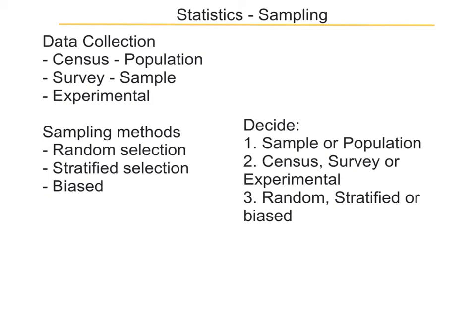With a biased sample, it means that you're not doing that properly. For example, if I was measuring the heights of students in Year 9 and I only measured the 14-year-old students, that would be biased because there are some 15-year-old students and they're probably taller. So when we're collecting data, we have to decide whether we're going to do the whole population or just sample some of it. If we do the whole population, that's a census; if we do a sample, it's a survey; and if we measure things, then experimental results will be measured. We have to decide what sort of sampling we're going to do — whether it's random or stratified — and we don't want it to be biased.